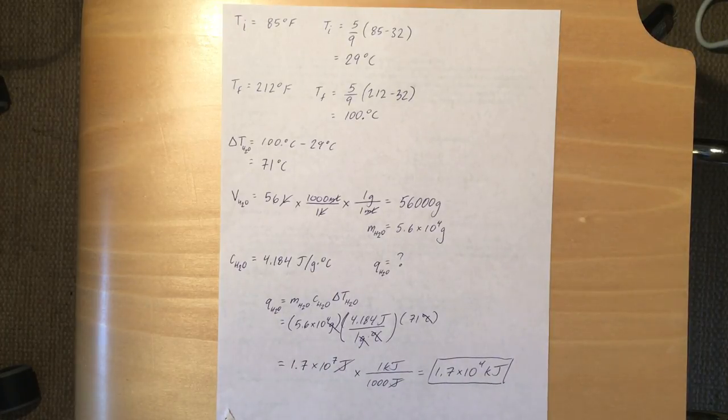So our answer is 1.7 times 10 to the seventh joules. And then the last thing we have to do is convert from joules to kilojoules. So remember, for every 1,000 joules, there's 1 kilojoule. And so our final answer is 1.7 times 10 to the fourth kilojoules.